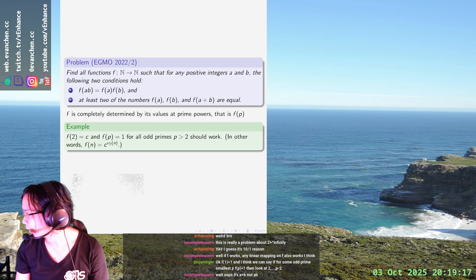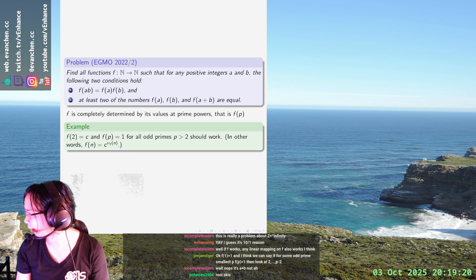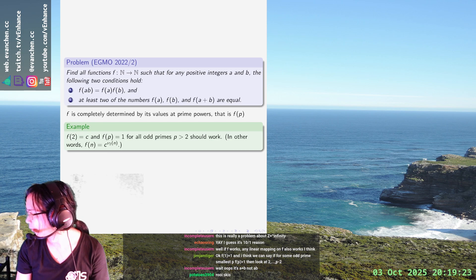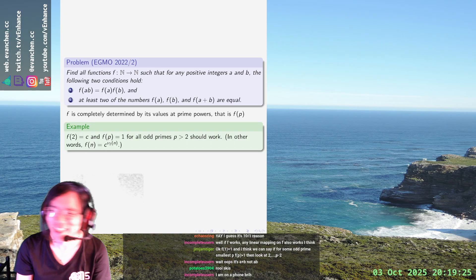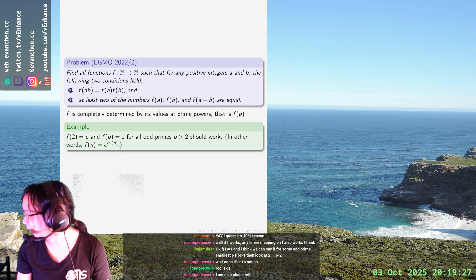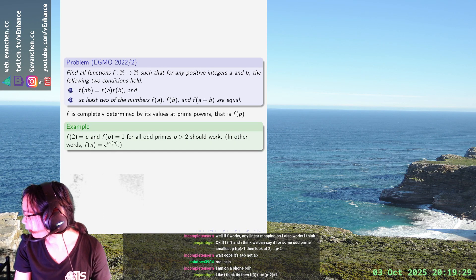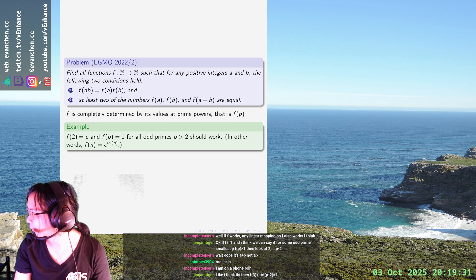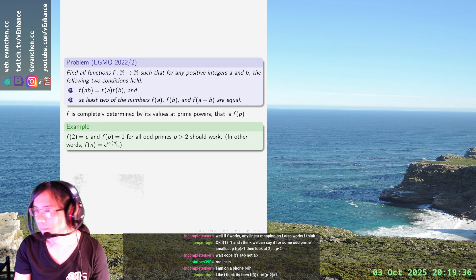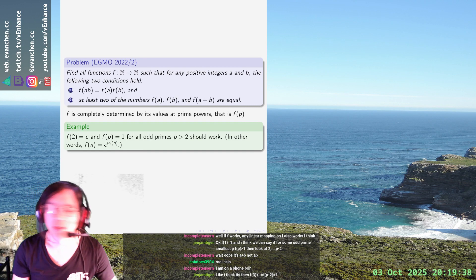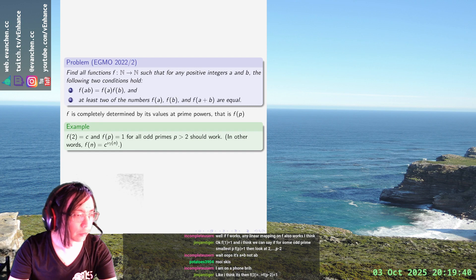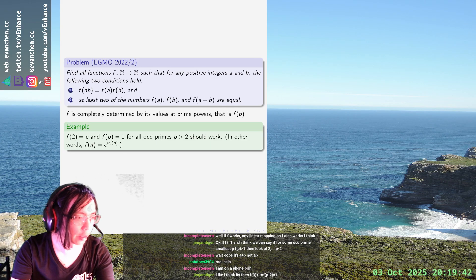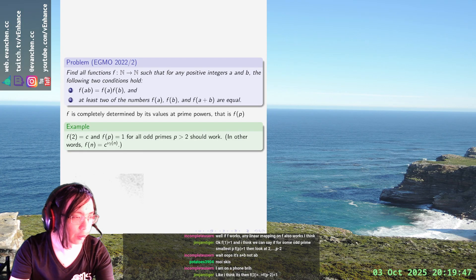Yeah, f is determined by its value on primes, so f(1) is 1. Really, yes, it is a plus b in fact and not a times b. Okay, I understand. For example, f(1) is 1 and f(2), f(3)...